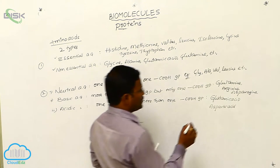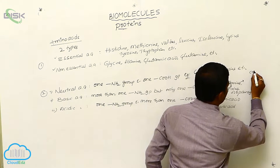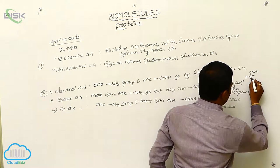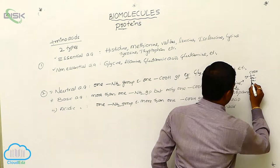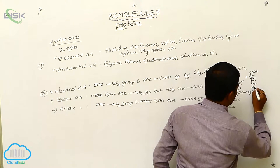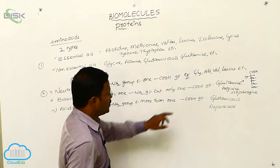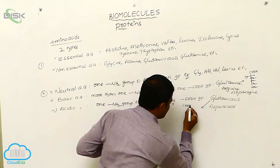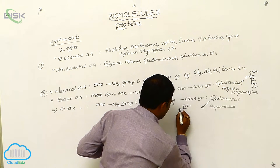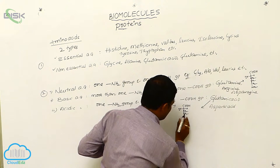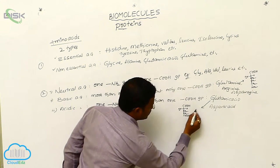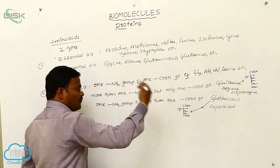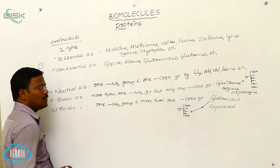Let's examine the structures with one example each. The structure of glutamine has only one acid group but two amino groups. For glutamic acid, the structure is: COOH — NH2 — CH2 — CH2 — CH2 — COOH. Glutamic acid has only one amino group but more than one acid functional group, which is why it is classified as an acidic amino acid.